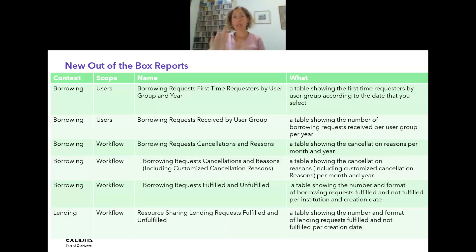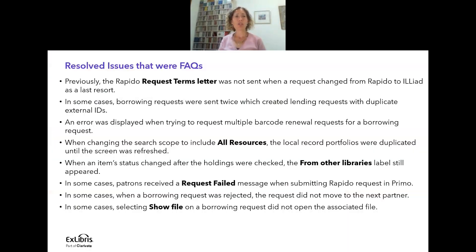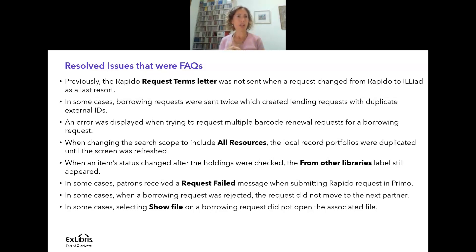That covers the November release. Please go to the Knowledge Center to make sure you have everything covered, including the documentation. Regarding resolved issues: in some cases, selecting 'Show file' on a borrowing request did not open the associated file — this has been resolved with the November release. Also, borrowing requests were sent twice, creating lending requests with duplicate external IDs — that has also been fixed. There are a bunch of good fixes worth reading through in the release notes.